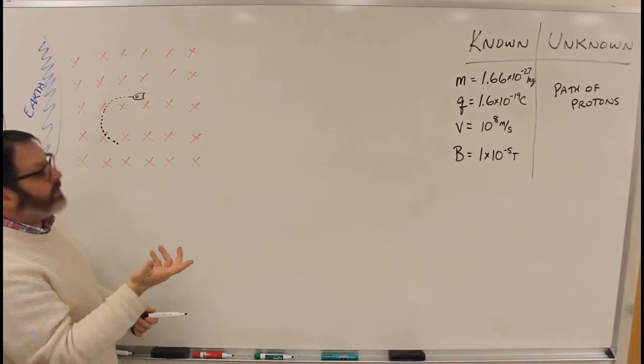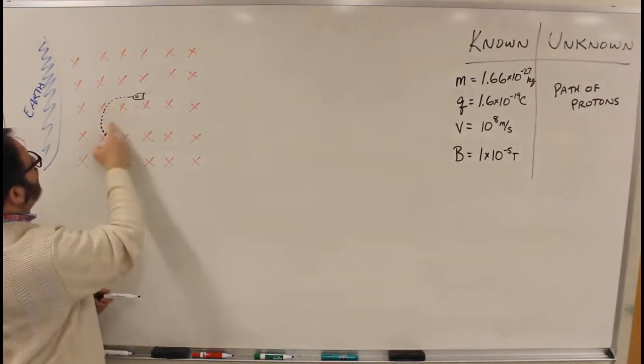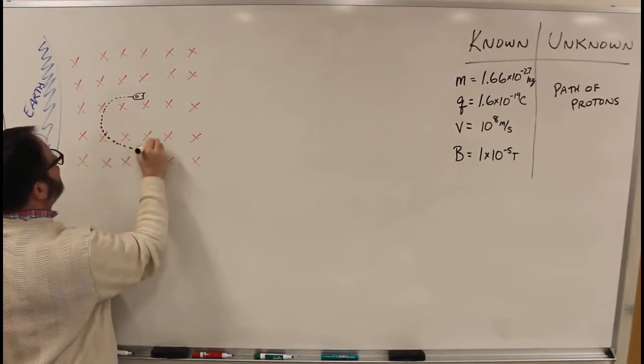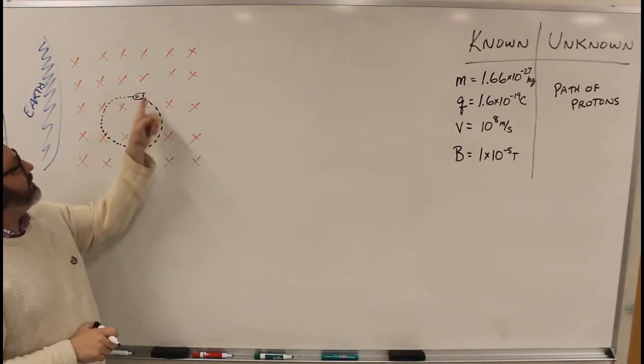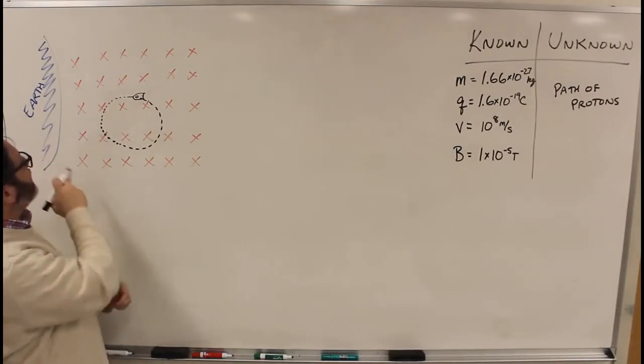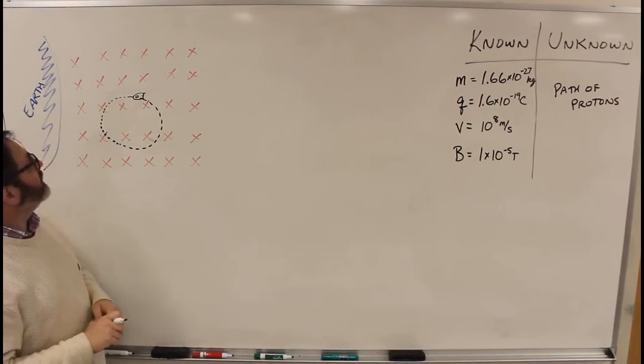It's really a centripetal force that's always pulling them perpendicular to the direction they're moving. So what's going to happen? Their own beam will hit them in the back of the ship. So attacking the Earth with a proton beam inside the magnetosphere turns out it was not a good idea.